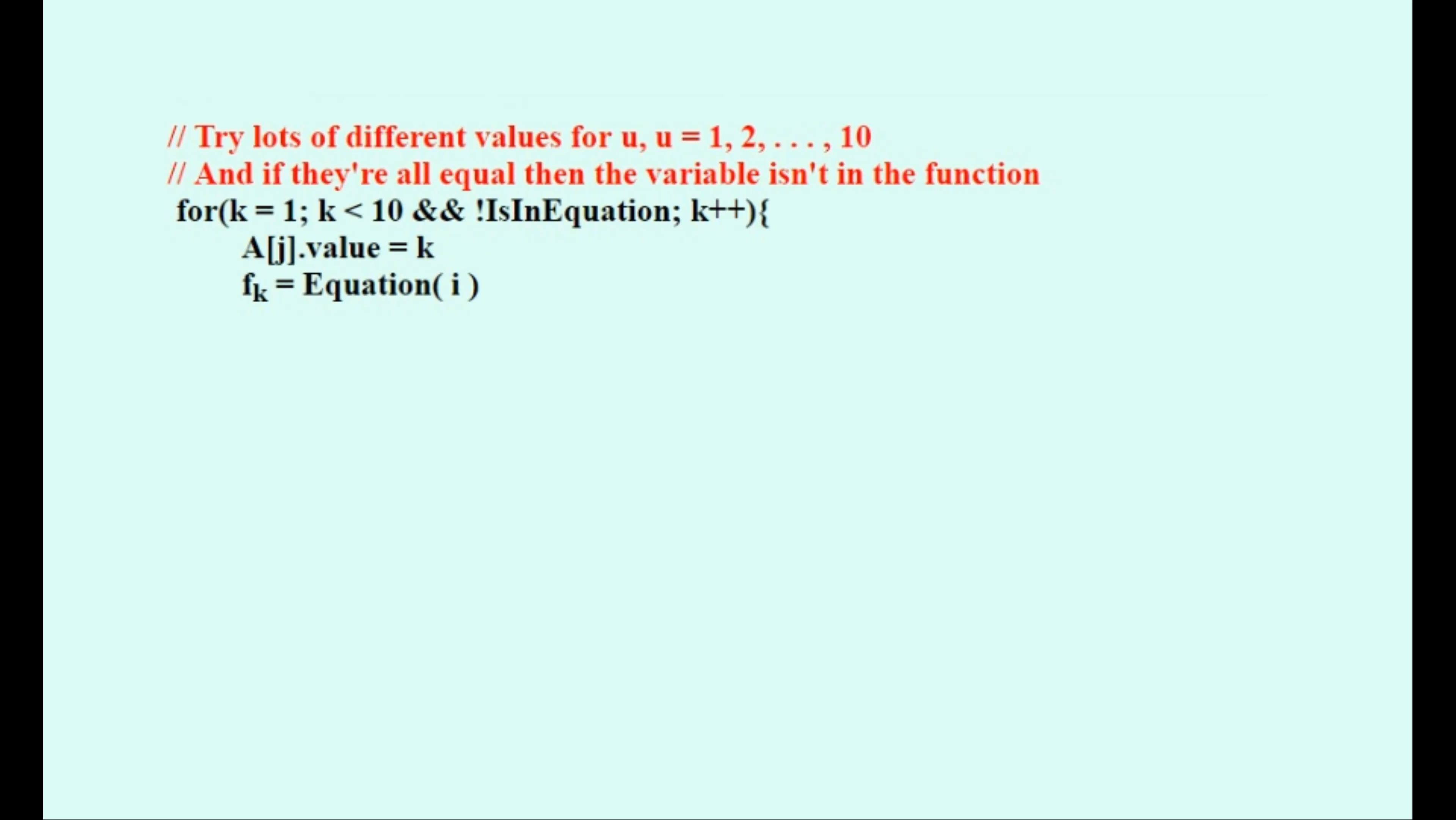Notice that we have an additional condition to jump out of this loop. If we find one instance of FK being different, then we can jump out of the loop immediately, which will save time. And when FK is not equal to F0, then we've found an example where this variable U that we're checking for influences the equation and is therefore in this equation. We'll set the variable equal to yes when we've found it, then jump out of the loop.